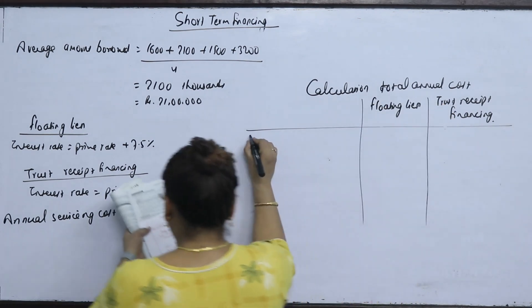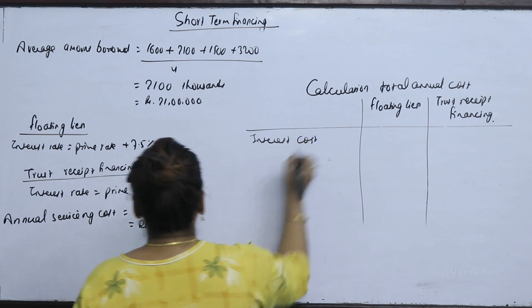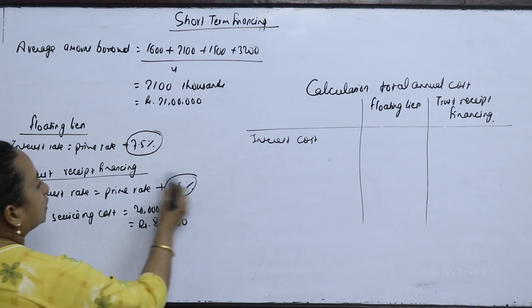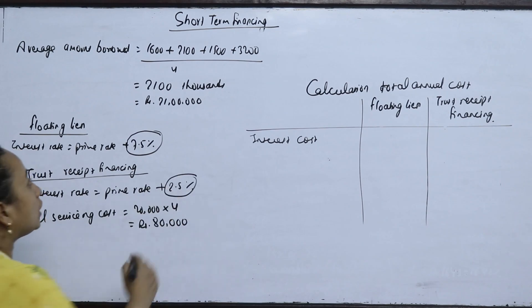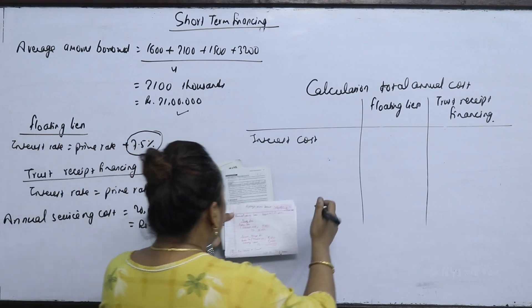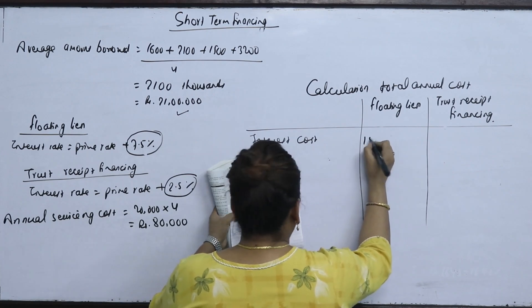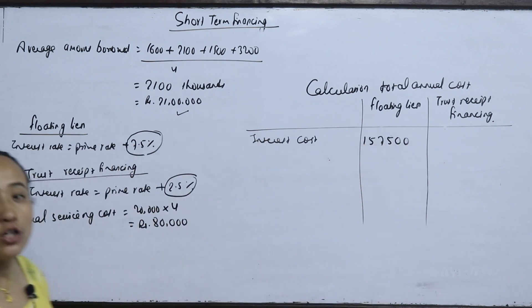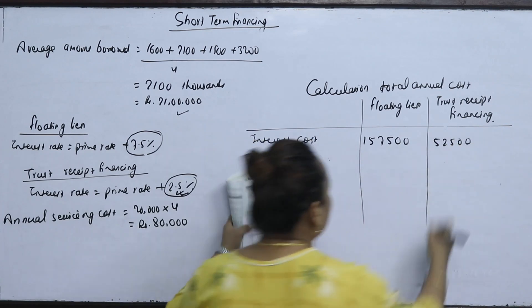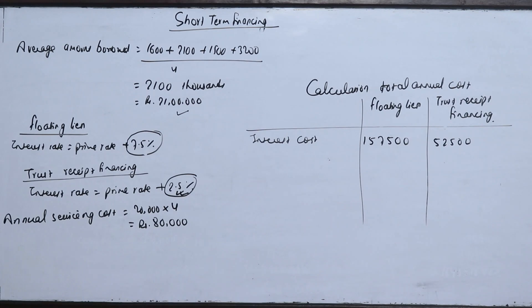What is the interest cost for each option? The prime cost is the same for both — 15%. For trust receipt financing, it is 2.5% above prime. The total borrowing is 21,000,000. For floating line: 21,000,000 at 7.5% above prime, noting that floating line will have additional cost to the company.